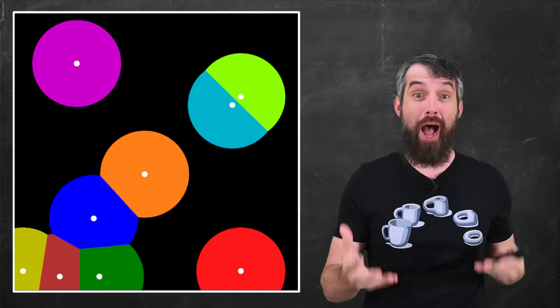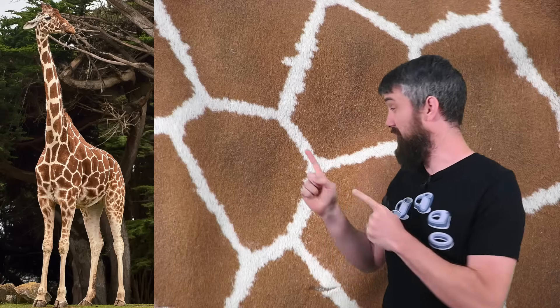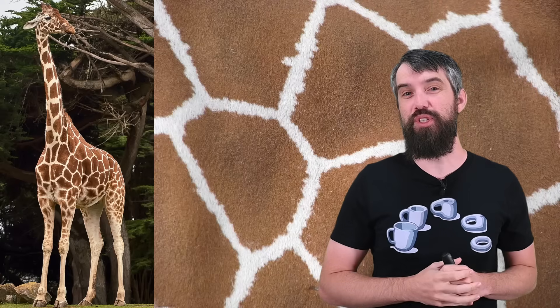There is a pattern that shows up throughout nature called Voronoi cells. For example, the cellular pattern on the back of this giraffe.